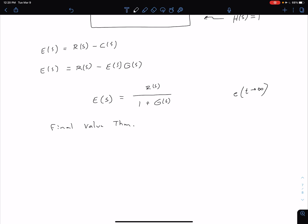With our final value theorem, we can then say that our E of infinity is going to be the limit as S goes to 0 of S times our E of S.